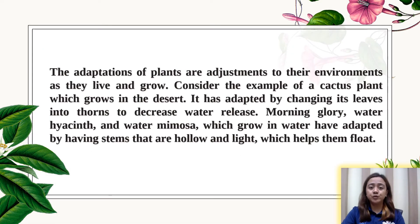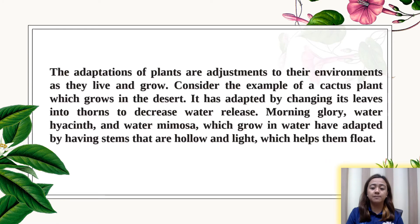The adaptations of plants are adjustments to their environments as they live and grow. For example, a cactus plant which grows in the desert has adapted by changing its leaves into thorns to decrease water release. Morning glory, water hyacinth, and water mimosa, which grow in water, have adapted by having stems that are hollow and light, which helps them float.